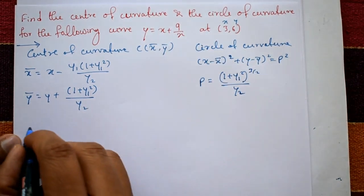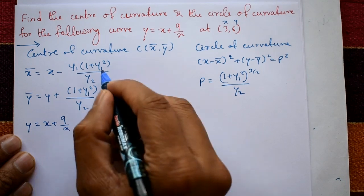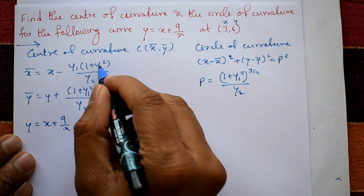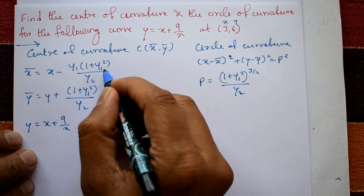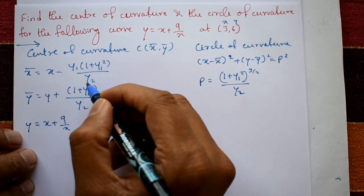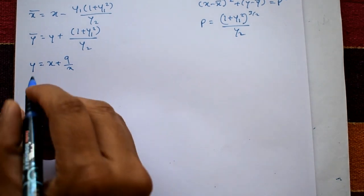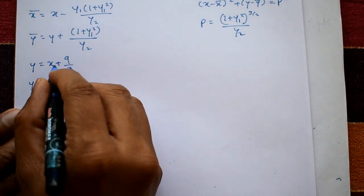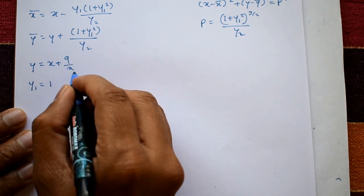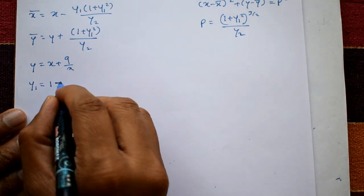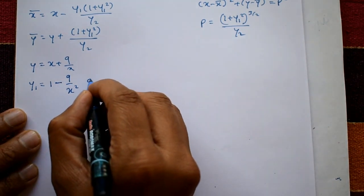The given curve is y = x + 9/x. We need y1 and y2 — the first and second derivatives. Differentiating: y1 = 1 − 9/x². The x term differentiates to 1, and 9/x differentiates to −9/x².